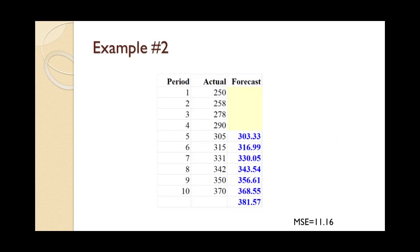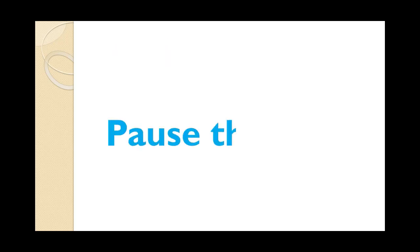For the forecast shown on the slide, prepare a z equal 3 control chart and comment on its meaning. Note that the mean squared error is 11.16. Since you have seen an example already, let me suggest that you pause the video and try to work this problem on your own. Once you are done, you can use the video to check your work and spot any mistakes you might have made.